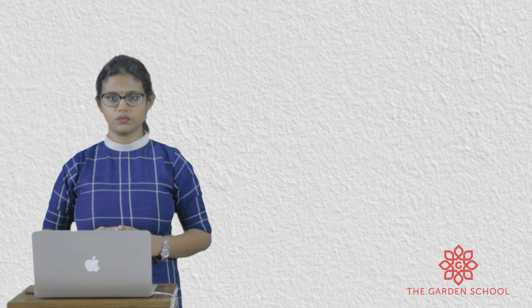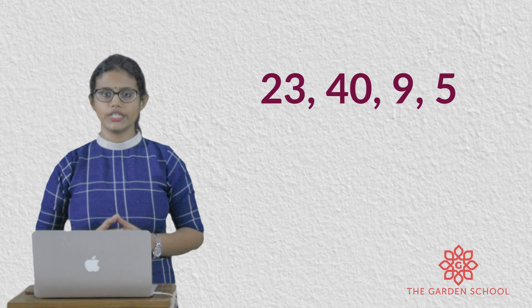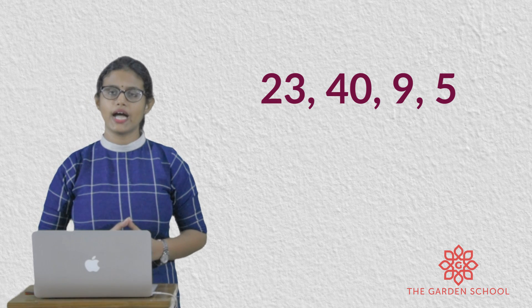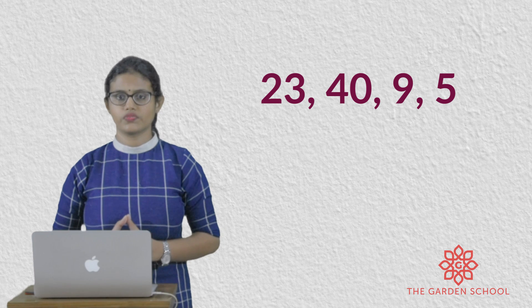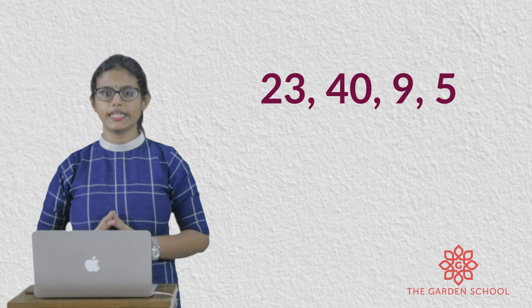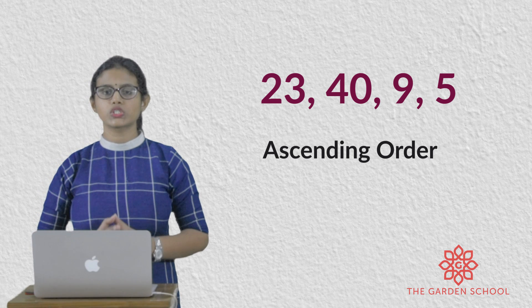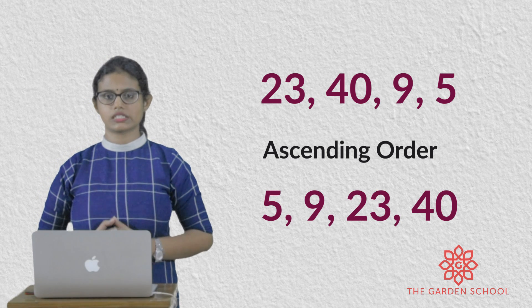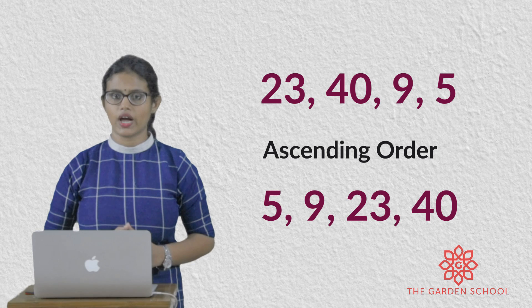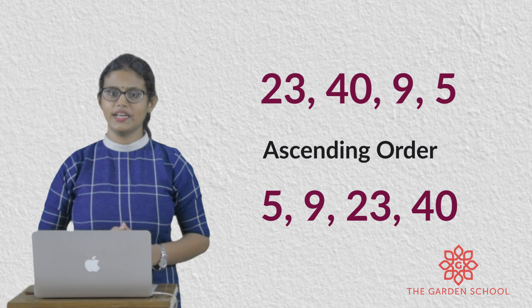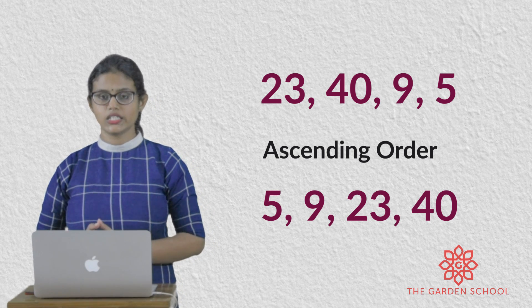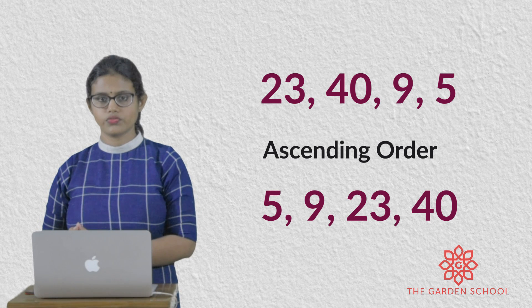Now I will give you some numbers and you have to say them in ascending order and descending order. The numbers are 23, 40, 9, 5. First we are going to order them in ascending order. In ascending order, which number comes first? The smallest number — that is 5. Then after 5, 9. After 9, 23. Then 40.